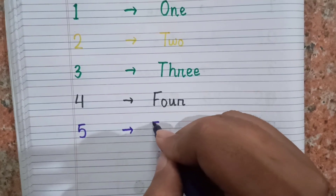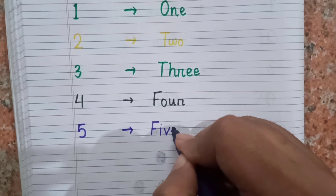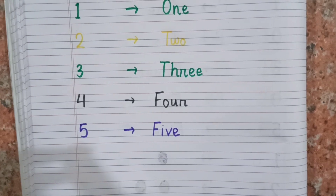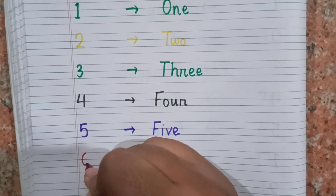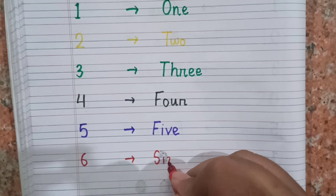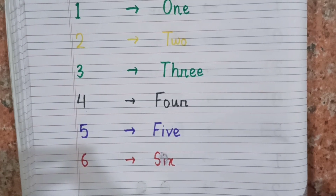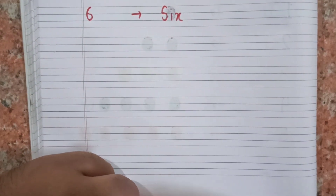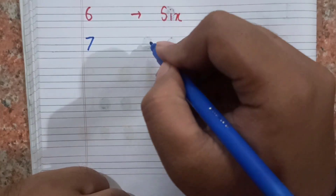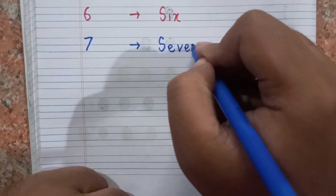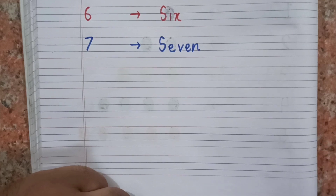The spelling of five is F I V E. Five. After five, the next number is six. This is six. After six, the next number is seven. This is seven, and the spelling of seven is S E V E N. Seven.